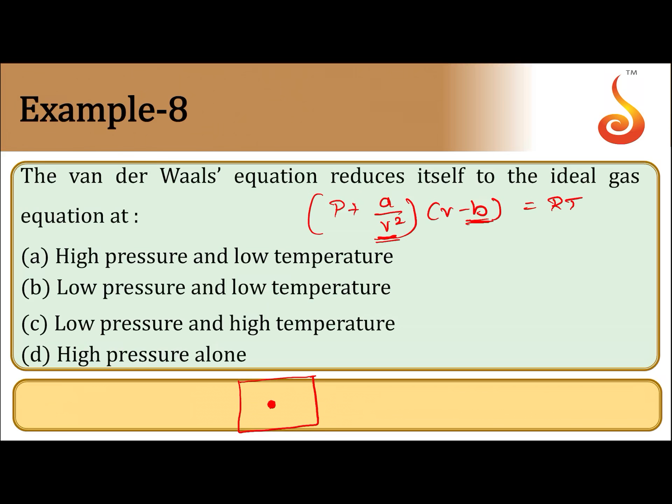If temperature is high, the volume occupied by the gas molecule will be high. If the temperature is high and pressure is low, the volume occupied by the gas will be very high. If the volume occupied by the gas is very high, the volume occupied by one molecule will be negligible with respect to the total volume. And if the volume is very high, intermolecular forces of attraction are also negligible.